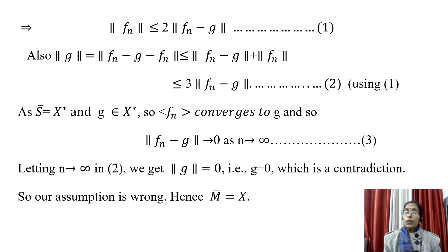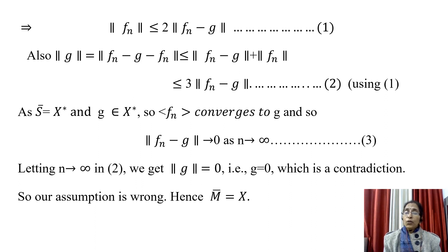Letting n tend to infinity in inequality (2), we get ‖g‖ = 0, that is g is the zero functional. This is a contradiction, because we established that g(x₀) ≠ 0. So our assumption is wrong, and the closure of M must equal X — meaning X is separable. Thank you.